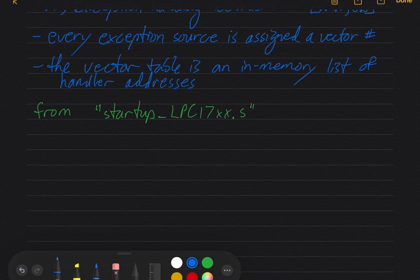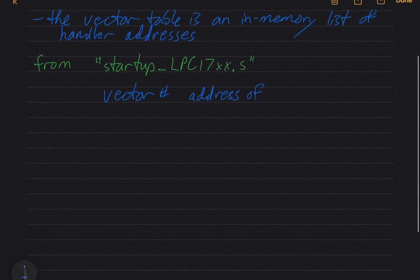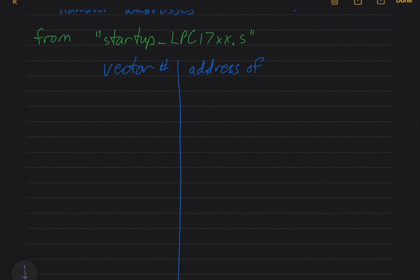So, what we have is the vector number, and then what address it contains, the address of which handler. This is going to be a 13-line table. Vector number zero is a little unusual with ARM, in that it is not assigned to an exception source. Instead, it's used to hold the stack pointer. When your system starts, it doesn't know where the stack is, so it gets that address from the vector table, from the first entry, and it initializes the stack pointer register with that.